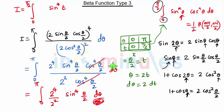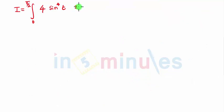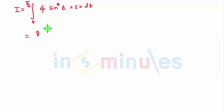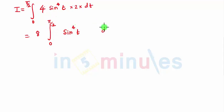Instead of dθ we are going to write 2 dt, so we have 2 into dt. We get 4 into 2 which will be 8, and 8 is a constant so we can take it out of the integration sign. We get 8 times the integration of 0 to π/2 of sin t the whole raised to 4 into dt.